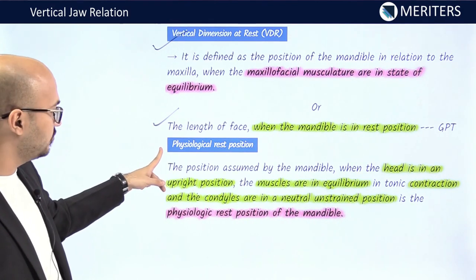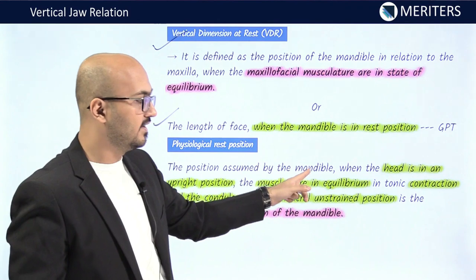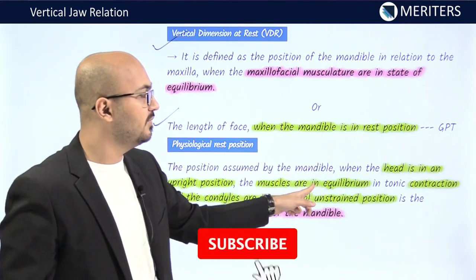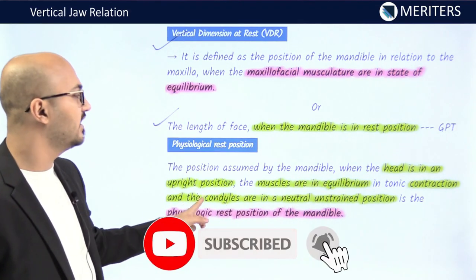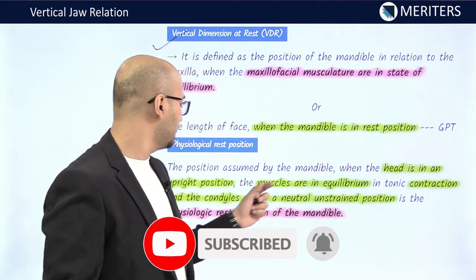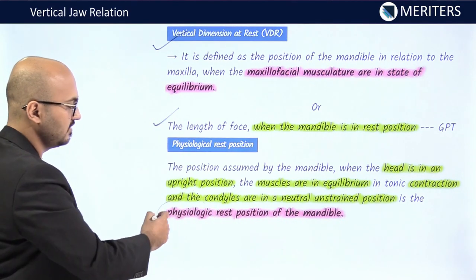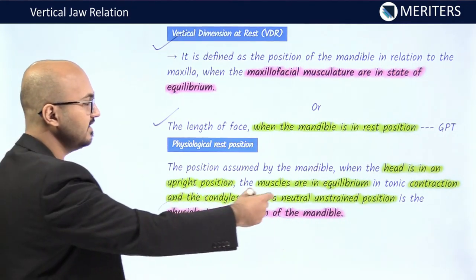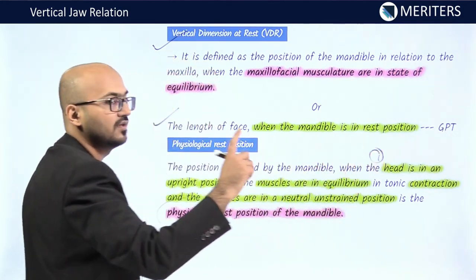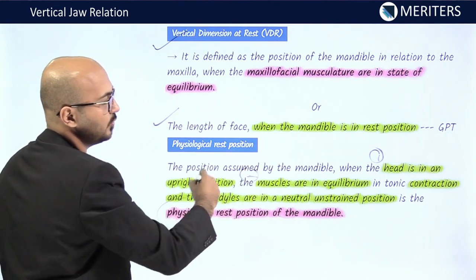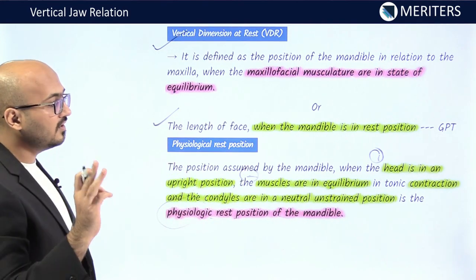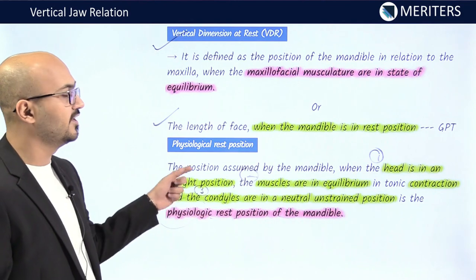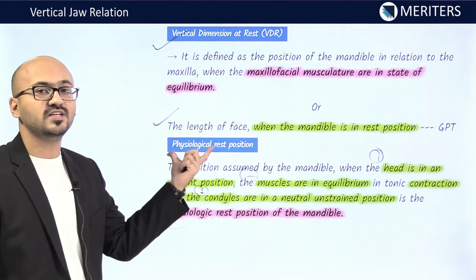What is physiologic rest position? It is the position assumed by the mandible when the head is in an upright position, the muscles are in equilibrium in tonic contraction, and the condyles are in a neutral, unstrained position. So all three factors — upright head position, muscle equilibrium, and condyles in neutral unstrained position — together define physiologic rest position.